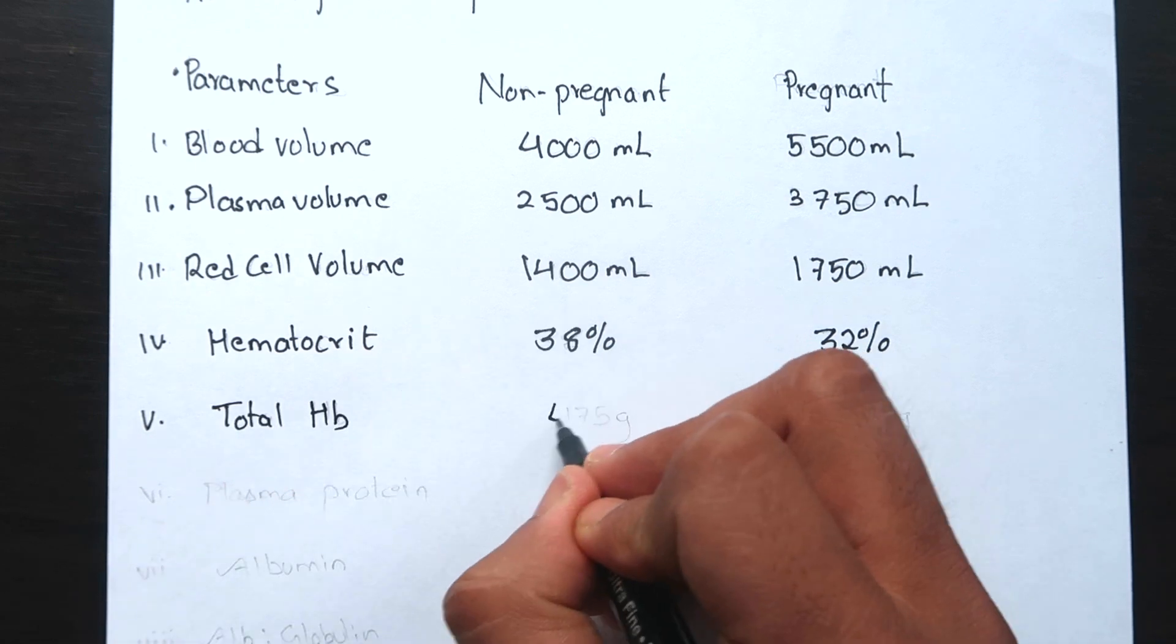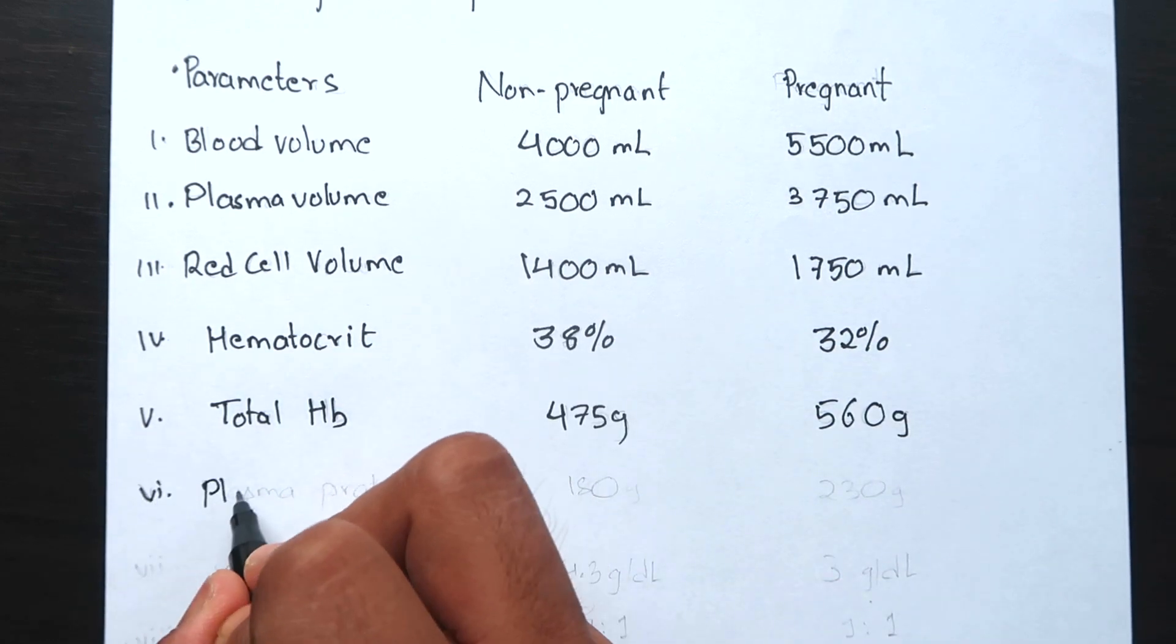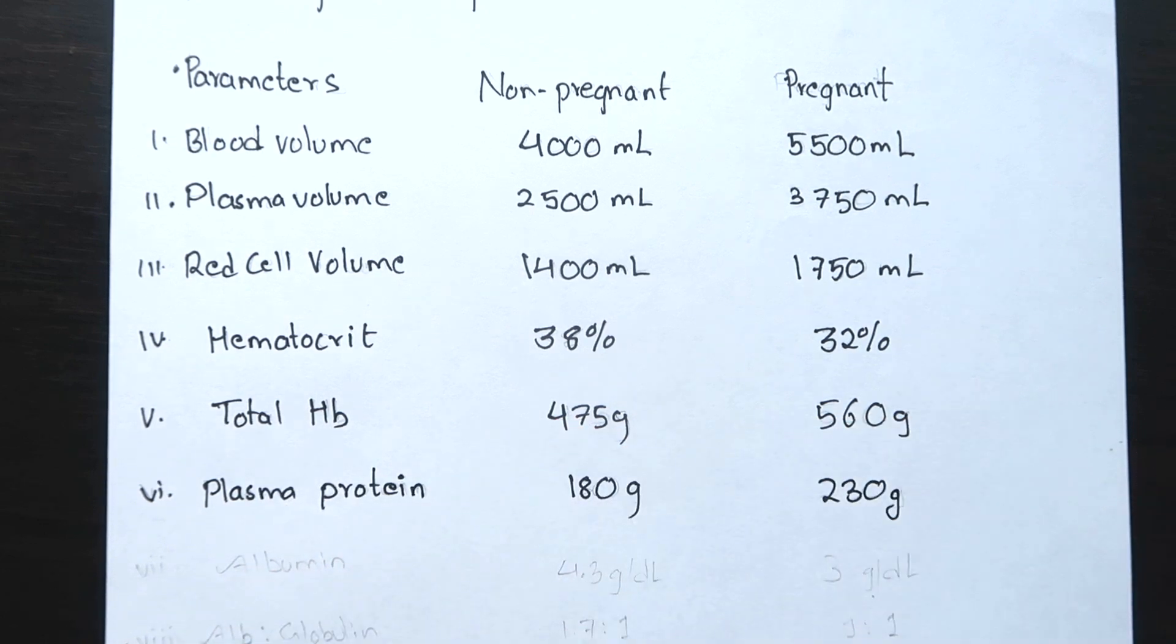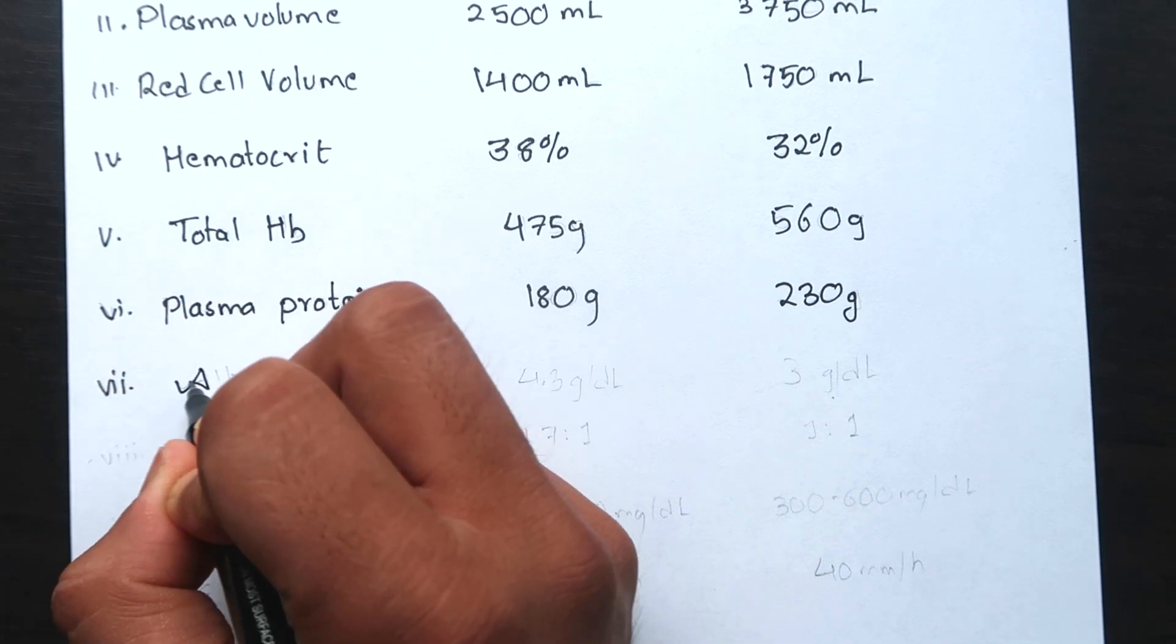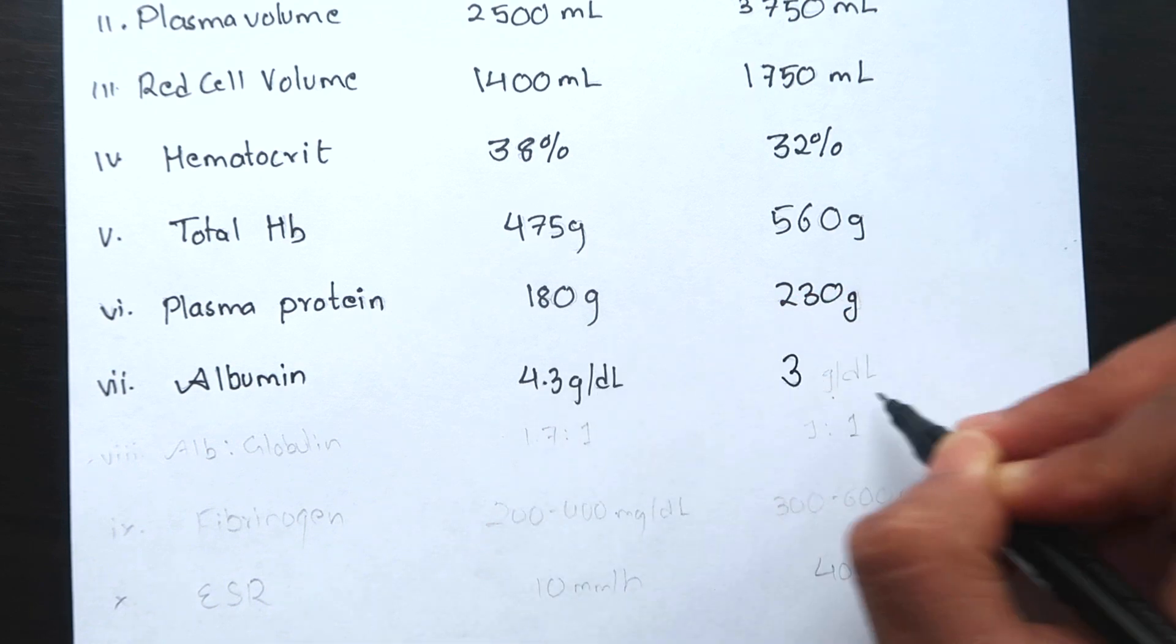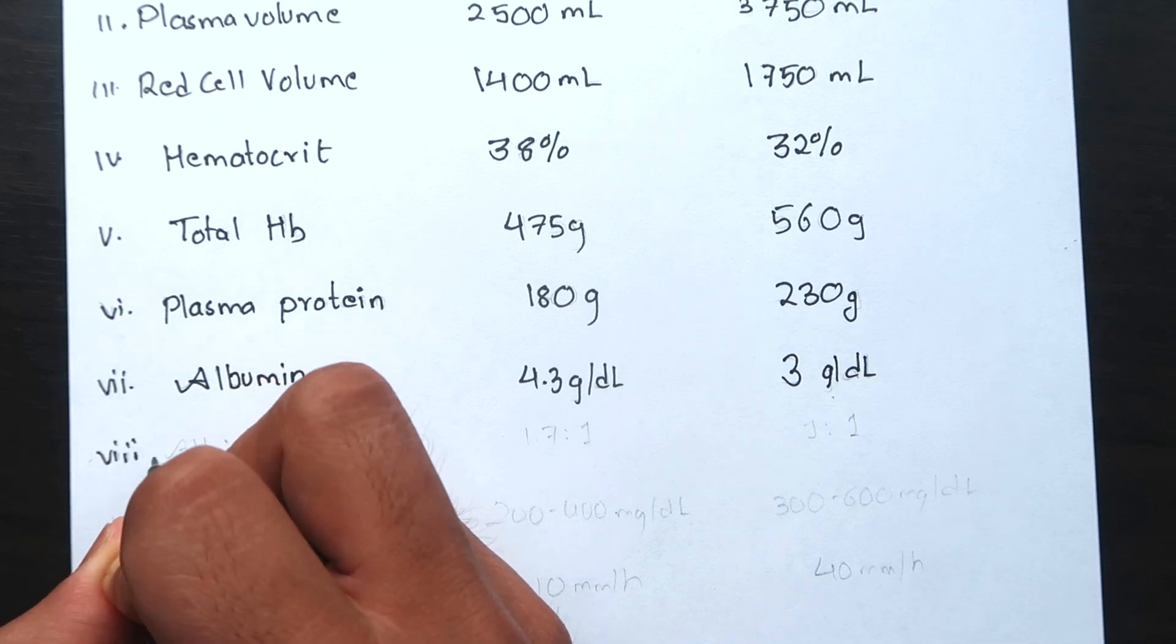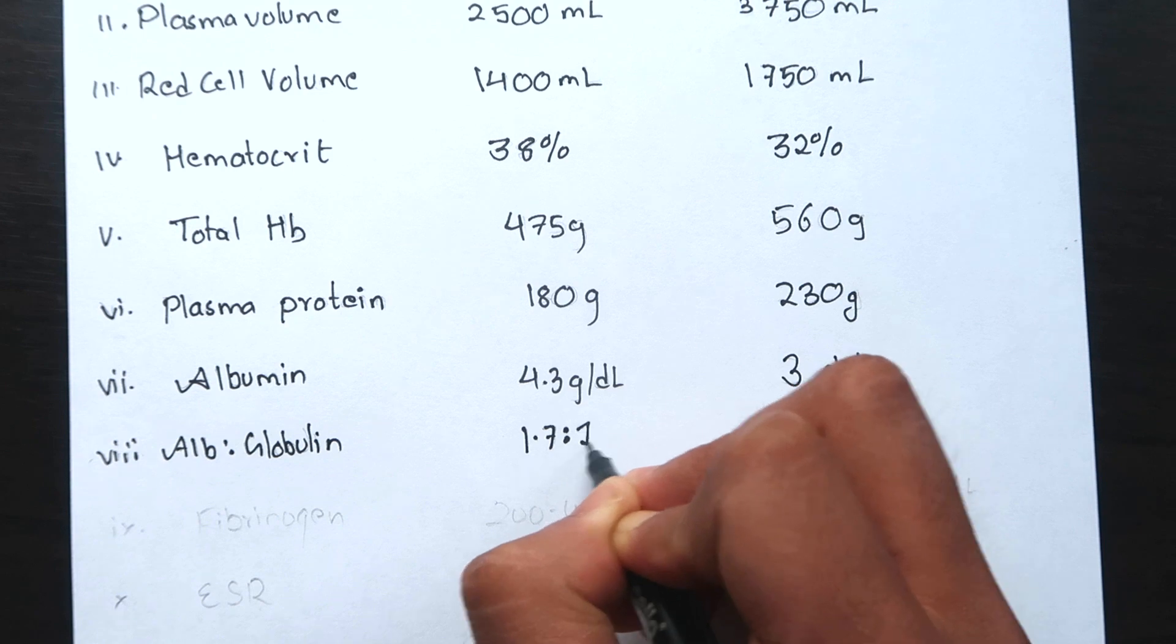The total hemoglobin also increases by 20%. Total plasma protein increases from the normal 180 gram to 230 gram at term. But there is marked falling albumin level from 4.3 gram percent to 3 gram percent due to increase in plasma volume. The normal albumin globulin ratio of 1.7 to 1 is diminished to 1 to 1.